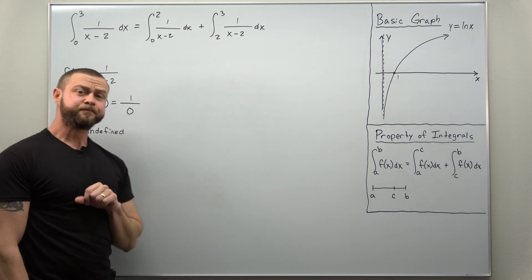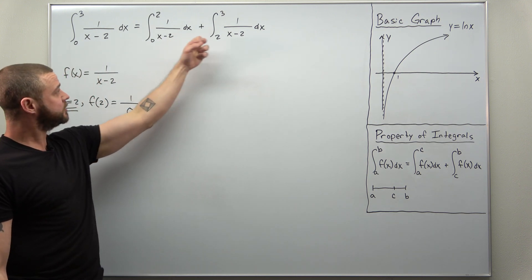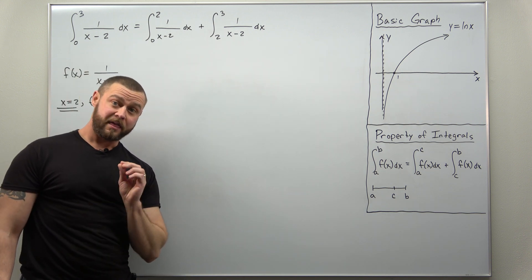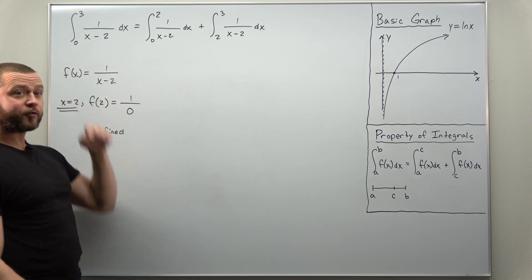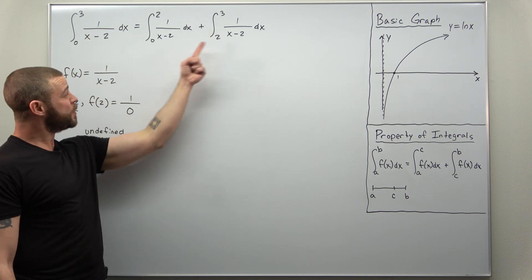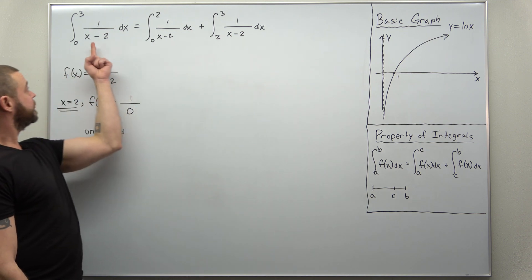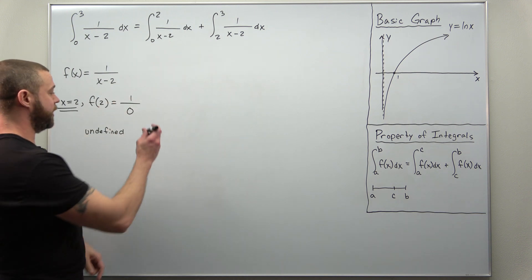How we proceed from here is we're going to try to determine if either of these is a convergent improper integral. If they both converge then the original one will converge. If either one of these pieces is divergent, the whole improper integral is divergent. Let's just pick the first one and start with that.